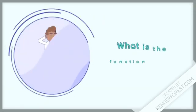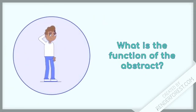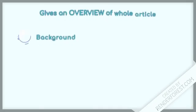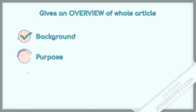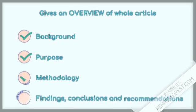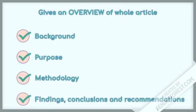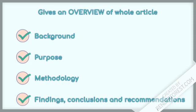What exactly is the function of an abstract? An abstract should give you an overview of the whole article and summarize each section. So it should give you some background to the problem, explain the purpose of the article, describe the methodology, and highlight the main findings and conclusions.